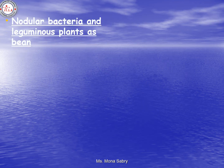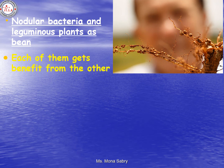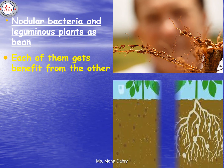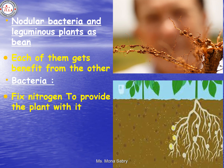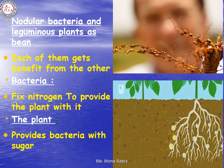An example of mutualism is the relationship between nodular bacteria and leguminous plants, where each gets a benefit from the other. The bacteria fix nitrogen to provide the plant with it, and the leguminous plant provides the bacteria with sugar. So nodular bacteria benefit from the plant, and the plant benefits from nodular bacteria by having nitrogen fixed on its roots.